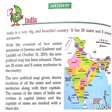It shows the location of all the states and union territories along with their capitals. The names of the states of India are written in capital letters, and the capitals of states are marked with a black dot.